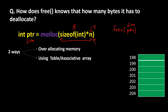For this problem, there are two methods to store the n information. The first is over-allocating the memory, and the second is using a table — or associative array. Let's understand these two ways one by one.